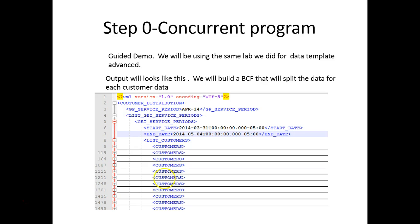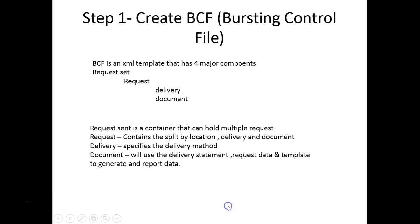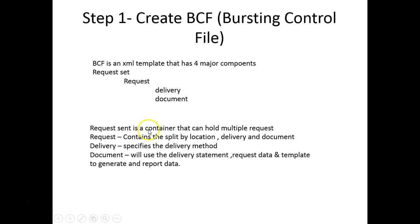The first step is to create the concurrent program that generates the list of customers, with multiple invoices per customer. The second step is to create the bursting control file. The bursting control file has four major components: the request set, the request, the delivery method, and the document. The request set is a container that holds multiple requests. A request contains the split location, delivery, and document. Delivery specifies the delivery method, and finally the document ties the XML to the template and to the delivery mechanism.